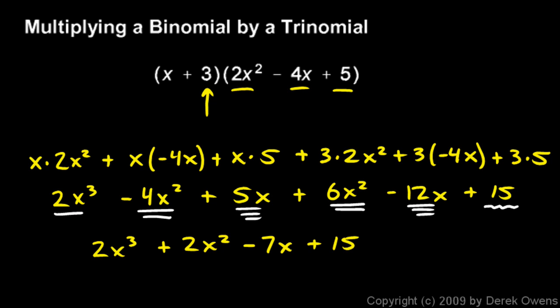So that's my answer: 2x cubed plus 2x squared minus 7x plus 15. And again, the way I got that was to multiply each term in one of these by each term in the other.